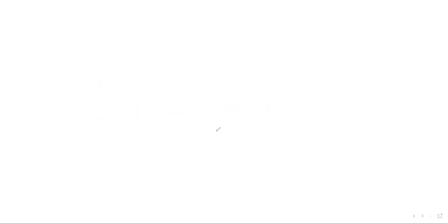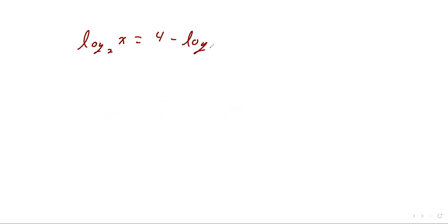Let's look at a little bit harder one. In this example, we have log base 2 of x equals 4 minus log base 2 of x minus 6. When you have a situation where you have multiple logs and you can't isolate each one of them, just get all the logs to one side. So I'll go ahead and I will add log base 2 of x minus 6 to both sides.